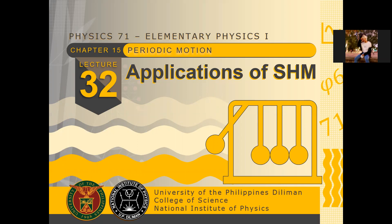Again, simple harmonic motion means that the magnitude of the acceleration should be proportional to the displacement, and the direction of the acceleration should be opposite that of the direction of the displacement. And it turns out that we can get some solutions to a spring-mass system.